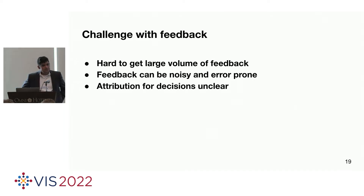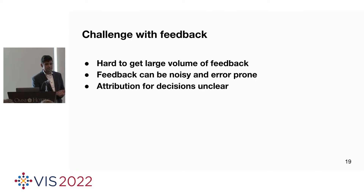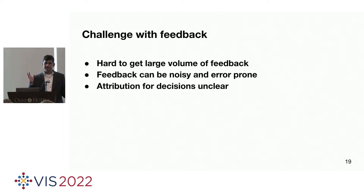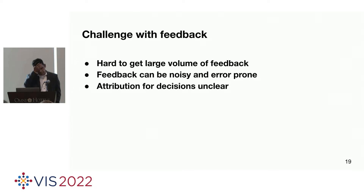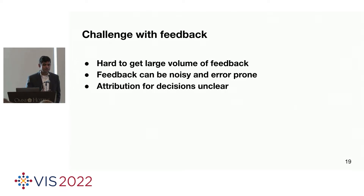Our approach was to create a feedback loop: I give the user an answer that's 80% correct, and they give me valuable feedback — this is correct, this is not, here's how to fix it. The challenges are: these are busy people, so you can't get a ton of feedback; the feedback is often noisy and error-prone, requiring something like a Wikipedia model with editors validating edits; and attribution is difficult — even when you get correct feedback, attributing why DFW here maps to arrival airport versus departure airport is never explicitly told to you.